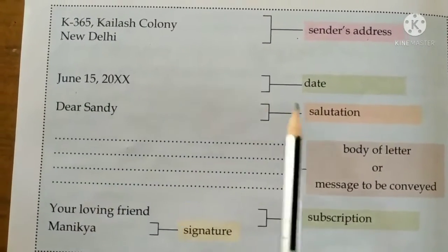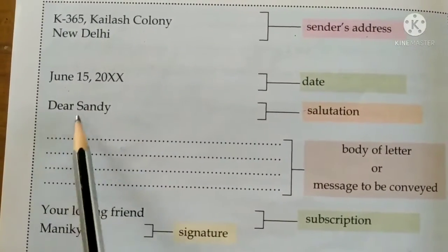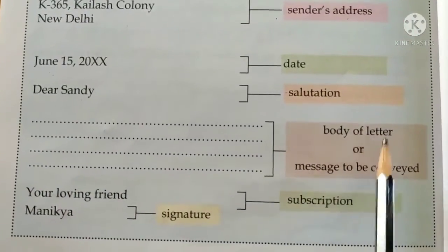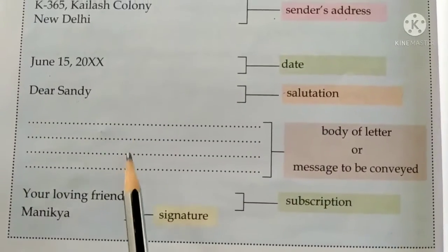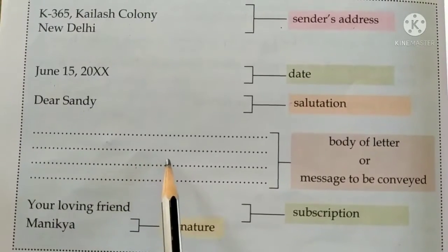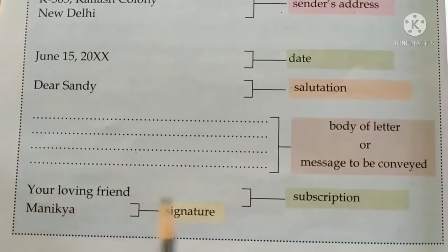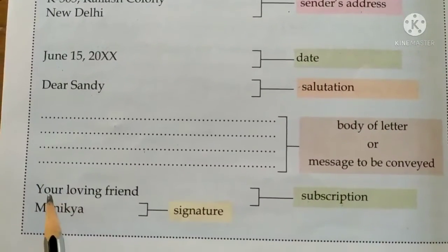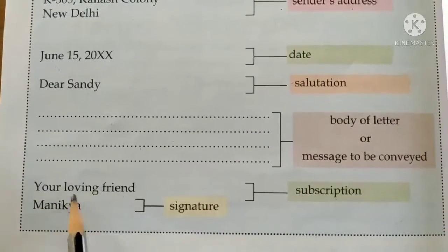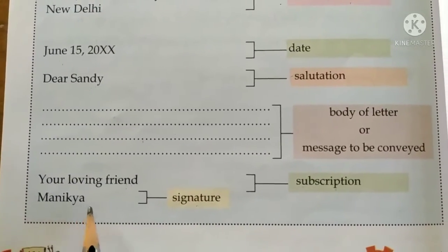Followed by the salutation — that is the person whom we are writing to. We address that person as 'Dear Friend' or take their name. Then the body of the letter, or the message to be conveyed — here you write what you want to tell or ask your friend or relative. This is followed by the subscription: if writing to your friend, write 'your loving friend'; if writing to your parents, write 'your loving son' or 'your loving daughter'. Followed by your signature — you will write your own name here.